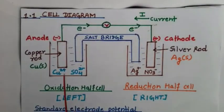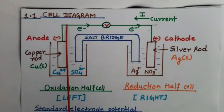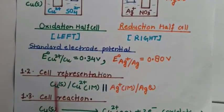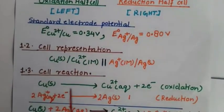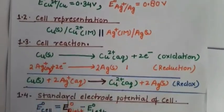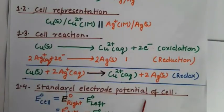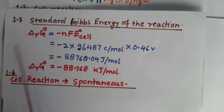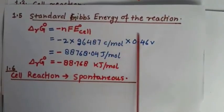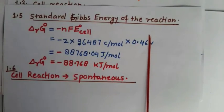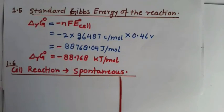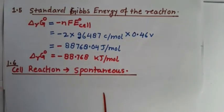To solve such problems, follow six steps: first, draw the cell diagram; second, represent the cell in short notation; third, write the cell reaction; fourth, calculate the standard electrode potential of the cell; fifth, find the standard Gibbs free energy for the reaction; and sixth, predict whether the change will be spontaneous or not. Thank you.